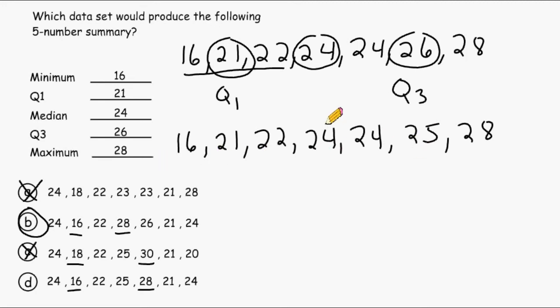Now the median of this data set is also 24 just like data set B. And Q1 is also 21. But if we take a look at Q3, it is 25. So we can eliminate choice D and confidently say that data set B is in fact the answer.